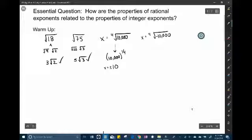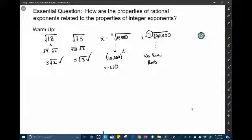And lastly fourth root of negative 10,000. Remember if you have a negative and an even, this one is not possible. There are no real roots. Okay so some basic things to remember from there.